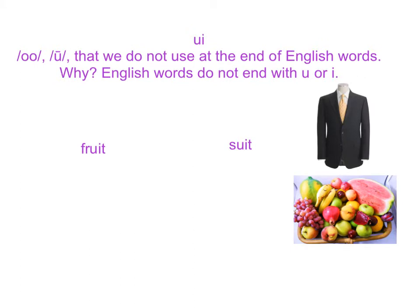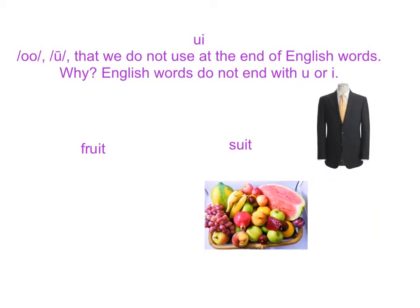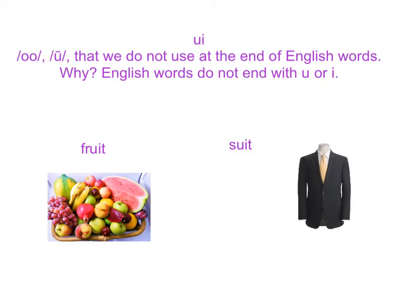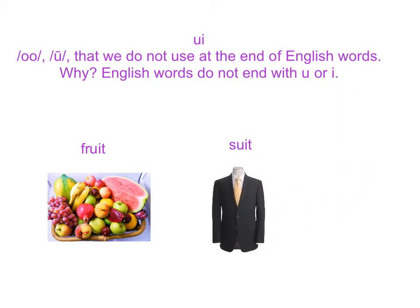Class, what is today's phonogram? OO, U — that we do not use at the end of English words. Why? English words do not end with U or I. For example, U is in fruit, and some people say it like suit. Suit. So here is the suit.